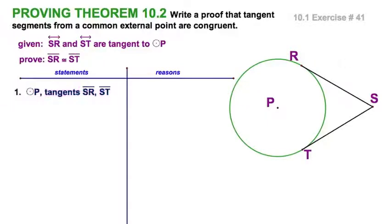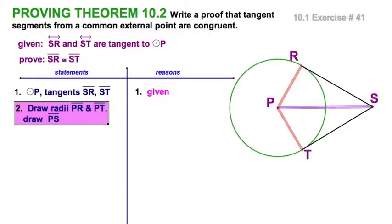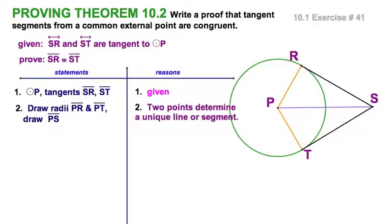Circle P, and these are tangents. We'll say they're tangent segments. We've already given them a trim. So that's our given. Now I'm going to draw these two radii, and this segment right here, because any two points determine a unique line ray or segment. And in three, I've got two radii, and radii of a circle are congruent. We like that.